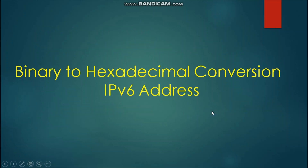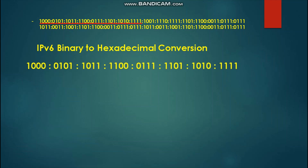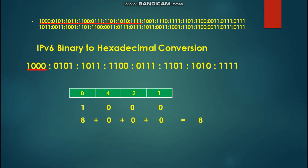Let us proceed with the binary to hexadecimal conversion of an IPv6 address. Using the highlighted binary bits as our example, we first solve for 1-0-0-0. Placing it under our table, the binary 1 is in the 8 position, so 8 plus 0 plus 0 plus 0 equals 8. We place 8 as our hexadecimal result.